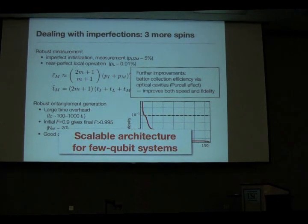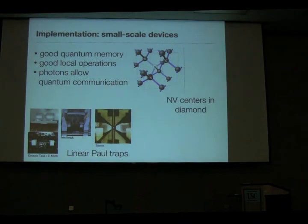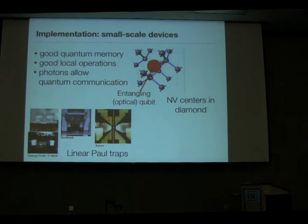This really suggests that we can think of a scalable architecture using just these few-qubit commodity-level systems — NV centers and linear Paul traps — where rather than thinking about adding more qubits, I just have to think about how to use photons for quantum communication. In the NV center case, I have an electron system for the optical bits and nearby carbon-13s or other nuclear spins which provide the memory qubits in the system.